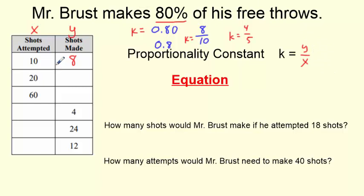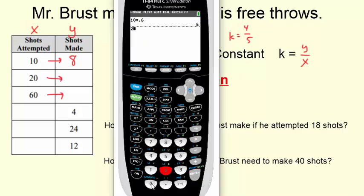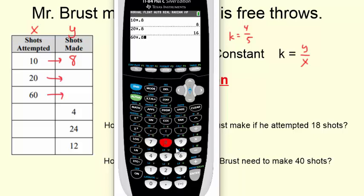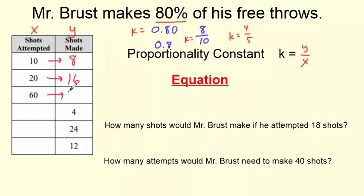K is 0.8, or K could also be 8 over 10. You could even reduce that — divide the 2 out — and K is 4 fifths. These are all the same thing. That is our K. If we know it's 80%, all I have to do is multiply. So 10 times 0.8 gives this. 20 times 0.8 is 16. 60 times 0.8 is 48. We were just multiplying by that K, whatever the proportionality constant is.